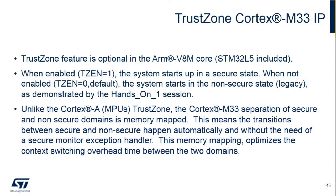Unlike the Cortex-A TrustZone, the M33 TrustZone is memory mapped. The transitions between the secure and the non-secure sections can happen from multiple points, which makes it robust for an embedded system. The Cortex-A TrustZone had a secure monitor exception handler that all transitions must go through. The Cortex-A runs at a higher frequency than the M, which is part of the reason for that design choice.